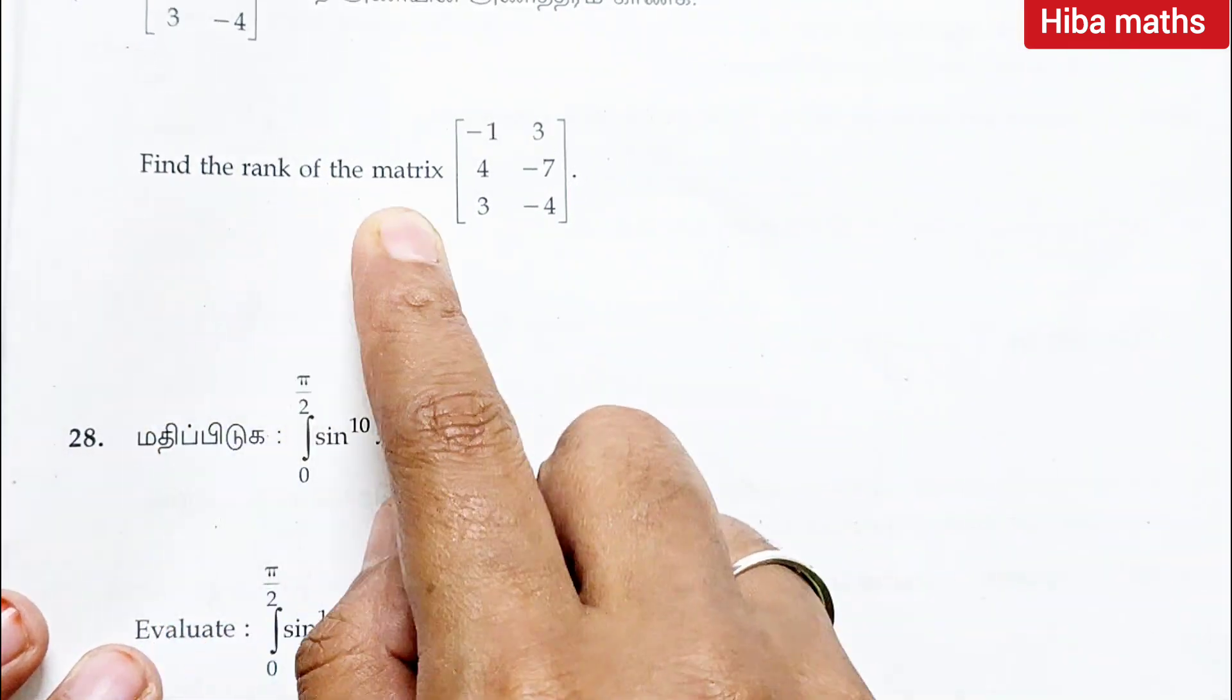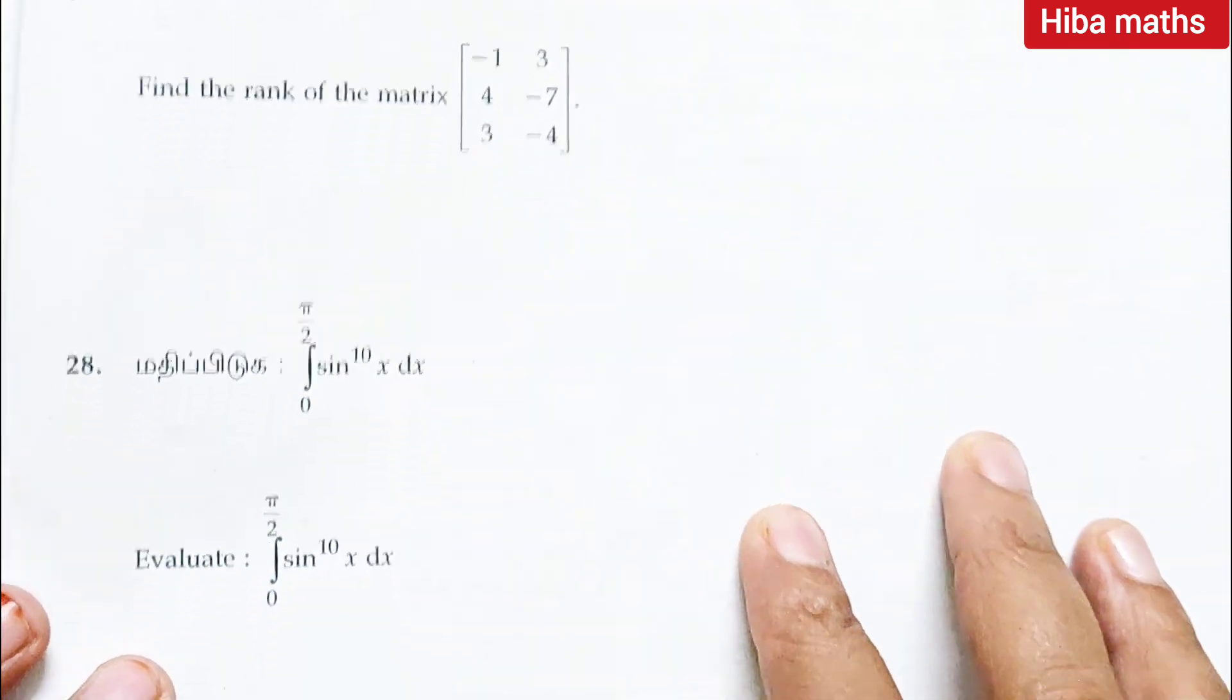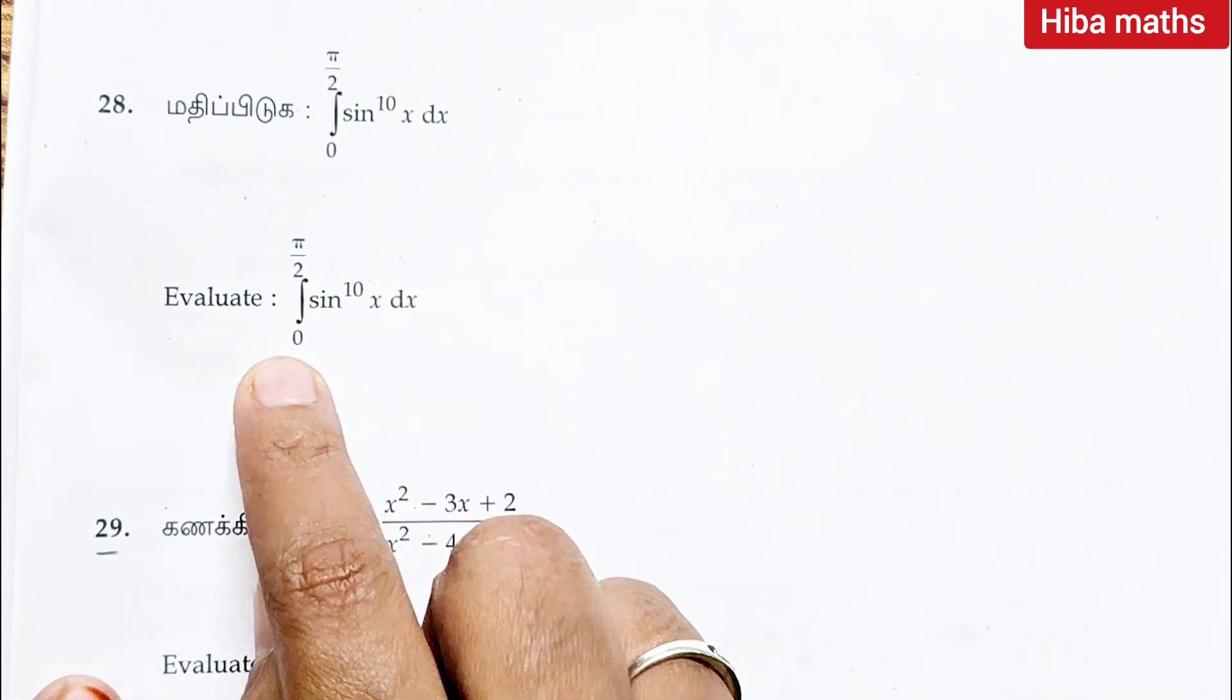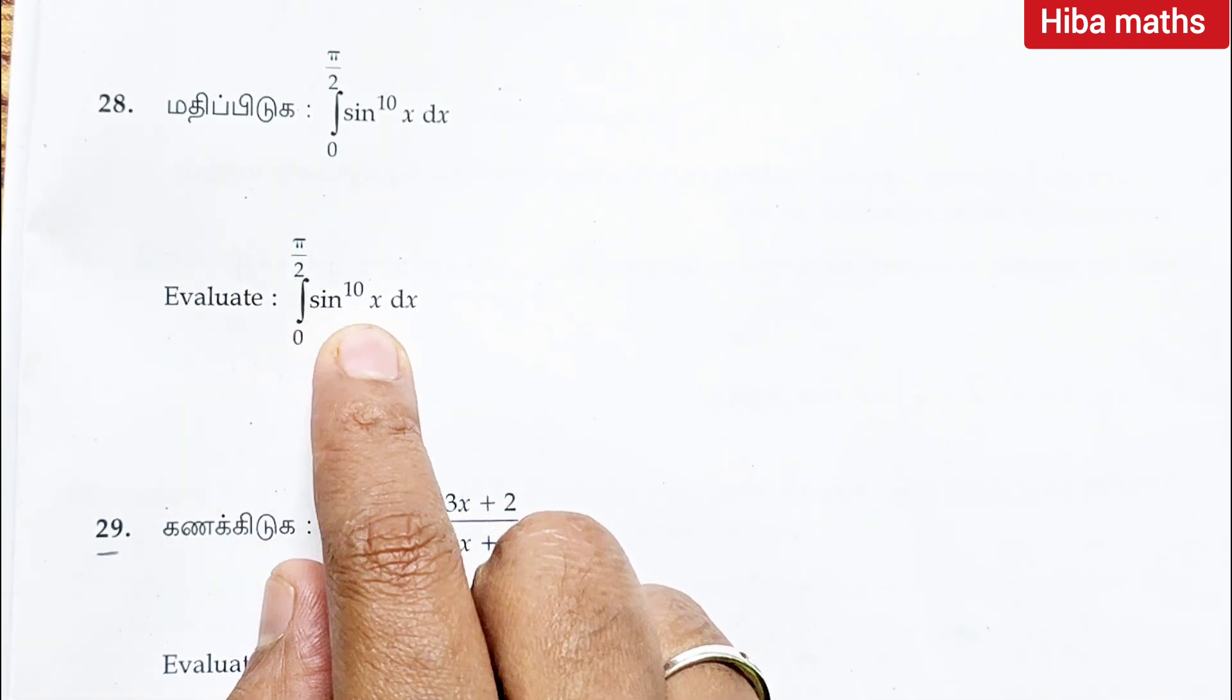Question 27: find the rank of the matrix. Question 28: evaluate 0 to pi by 2 sine power 10 x dx.